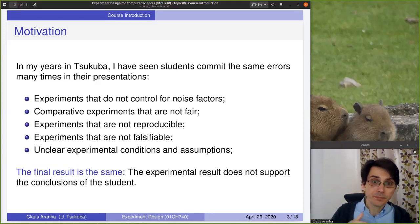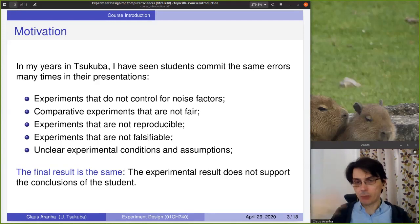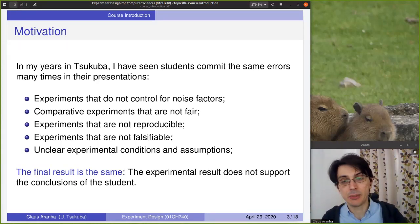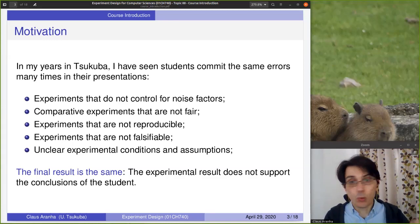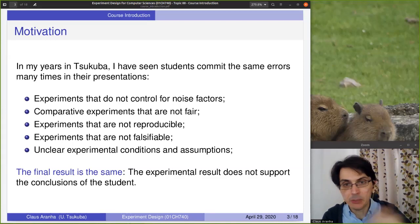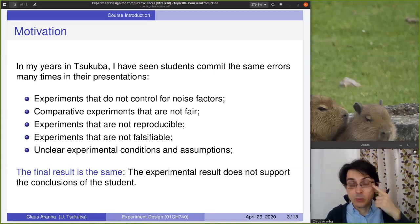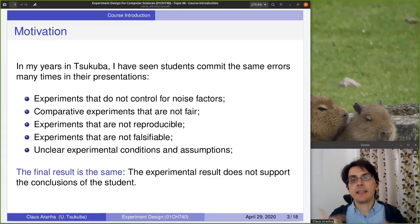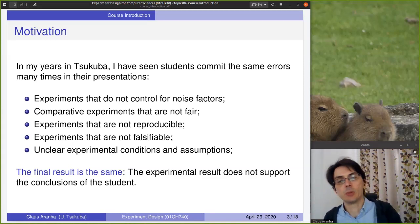In almost all cases, the experimental conditions and assumptions are not clear. Is this data an average of many experiments or from one single experiment? What is the data that was used? What is this — a mean, a median? Is there some deviation shown? What is the source of that deviation? The final result of all these errors is the same: the result the student is presenting does not support the conclusions they wanted to show.